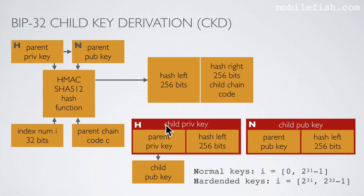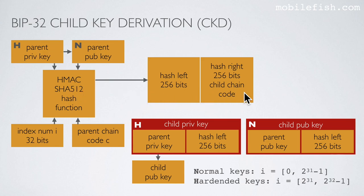If we have the child private key we can create the child public key. If we now increase the index number by 1, for instance 2 to the power of 31 plus 1, we insert it into the hash function using the same parent private key and the same parent chain code. It will create a new hash value with a new child chain code. The hash left is inserted and together with the parent private key it forms a new child private key, from which a new child public key can be created. If we keep increasing this index number we create new child private keys and child public keys.